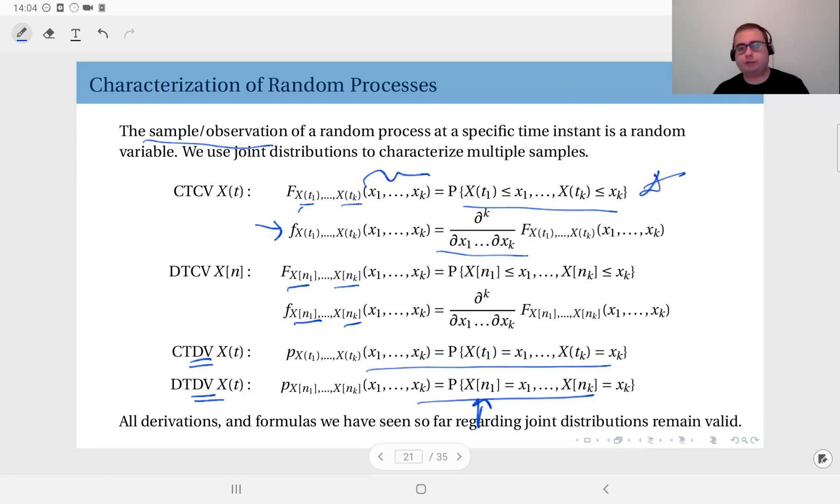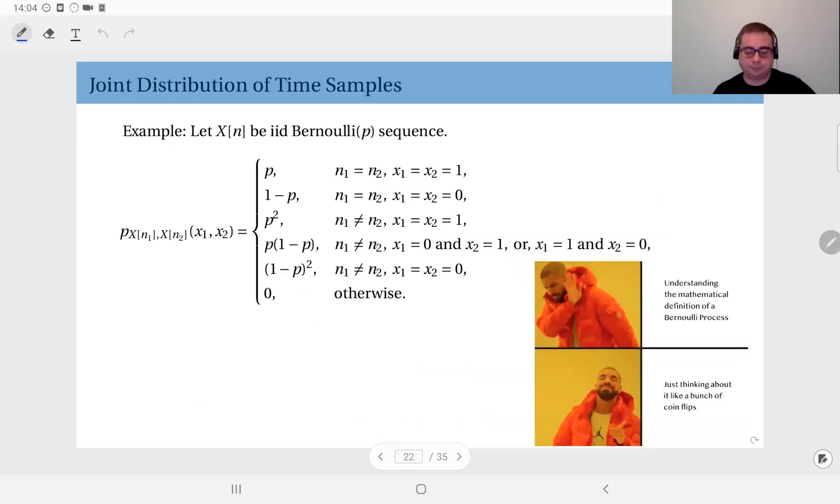The only thing we have to know is how we can characterize random processes. If you sample them at certain time instances, you obtain a random vector, and the joint distribution of this random vector sort of describes how the random process behaves. Here's a simple example. Let X(n), a random process, be an IID Bernoulli P sequence. By the way, if your random process is discrete time, we also sometimes call it a random sequence because it's a sequence. It's not a continuous time function, but it's a sequence of outcomes. So sometimes we call it a random sequence. Here we have an IID Bernoulli sequence.